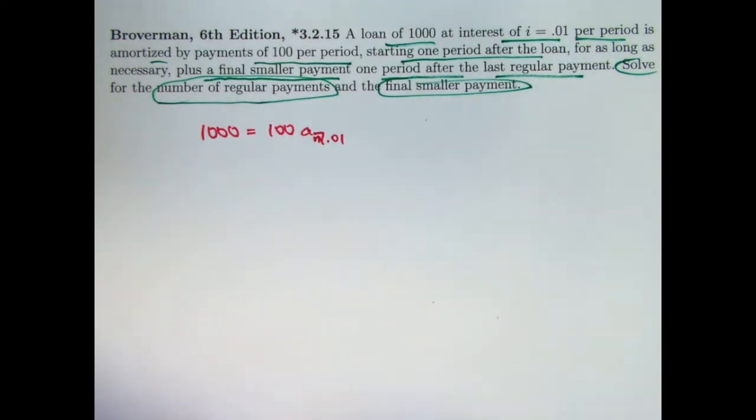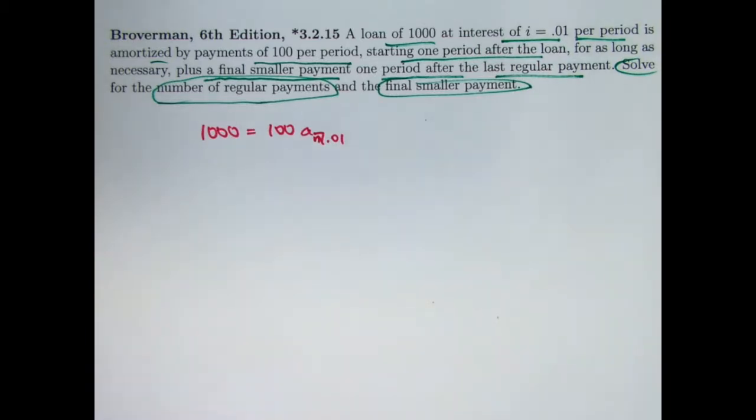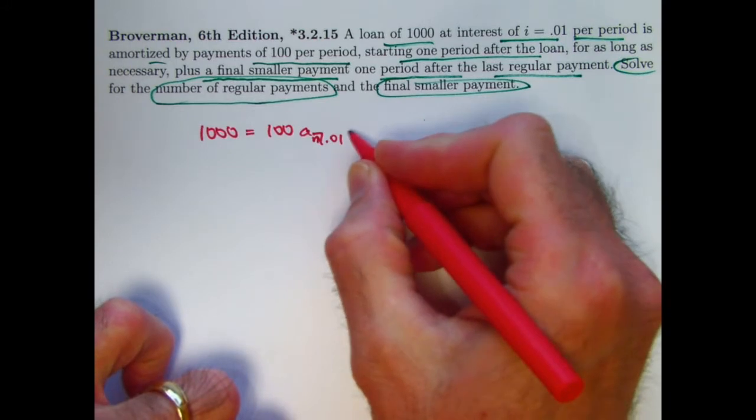Now in all likelihood, especially because of the way they're stating this problem, n is not going to be an integer. It's going to be something else. You might need to use logarithms to solve for n so we're probably going to get an irrational number technically speaking. But if n turns out to be 17.36 then we'd essentially have 17 regular payments and then the 18th payment would be our smaller final payment. This is something we can definitely deal with.